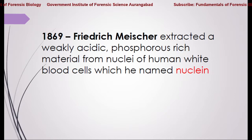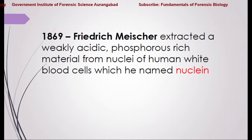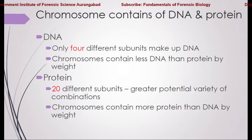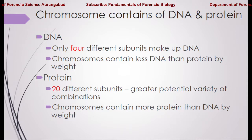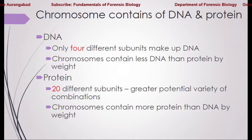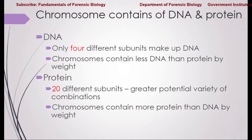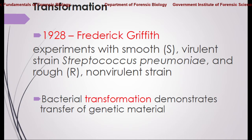Back in 1869, Frederick Miescher for the first time extracted a weakly acidic, phosphorus-rich material from nuclei of human cells, which he named Nuclein. We know that chromosomes contain DNA and protein. Comparing these two biomolecules, DNA has only four different subunits, while proteins have at least 20 standard amino acids, giving a greater potential for variety of combinations. The chromosome contains a greater amount of protein than DNA by weight.